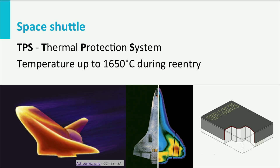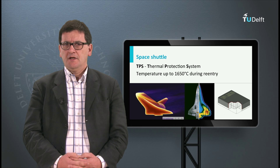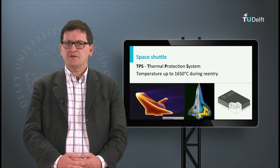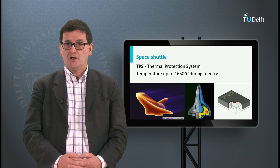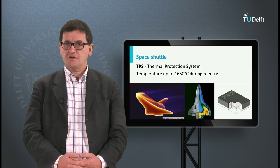Another famous material applied on the space shuttle are the black tiles — see the picture on the right. These are made of lightweight silica materials with a lot of air included. The outside is a carbon layer. Most tiles were applied at the lower surface of the space shuttle, and most tiles had unique dimensions.